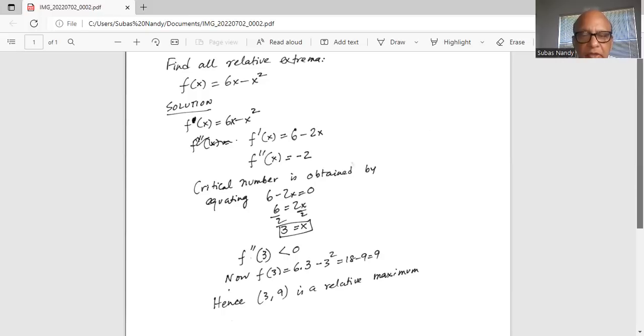So x is 3, y is 9. Therefore, the point (3, 9) is a relative maximum. That is because f double prime 3 is less than 0.